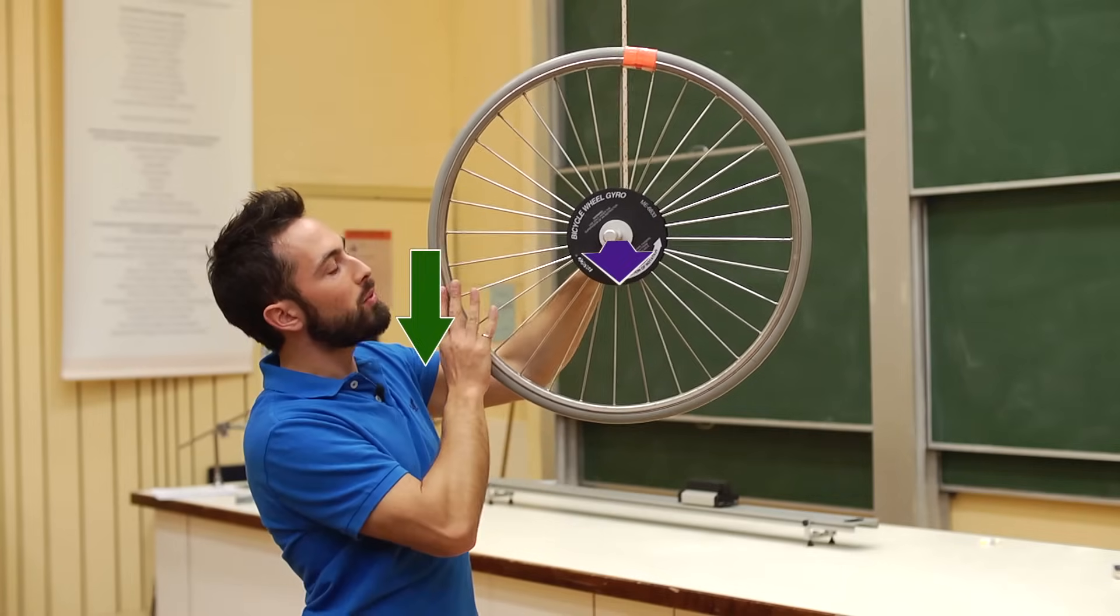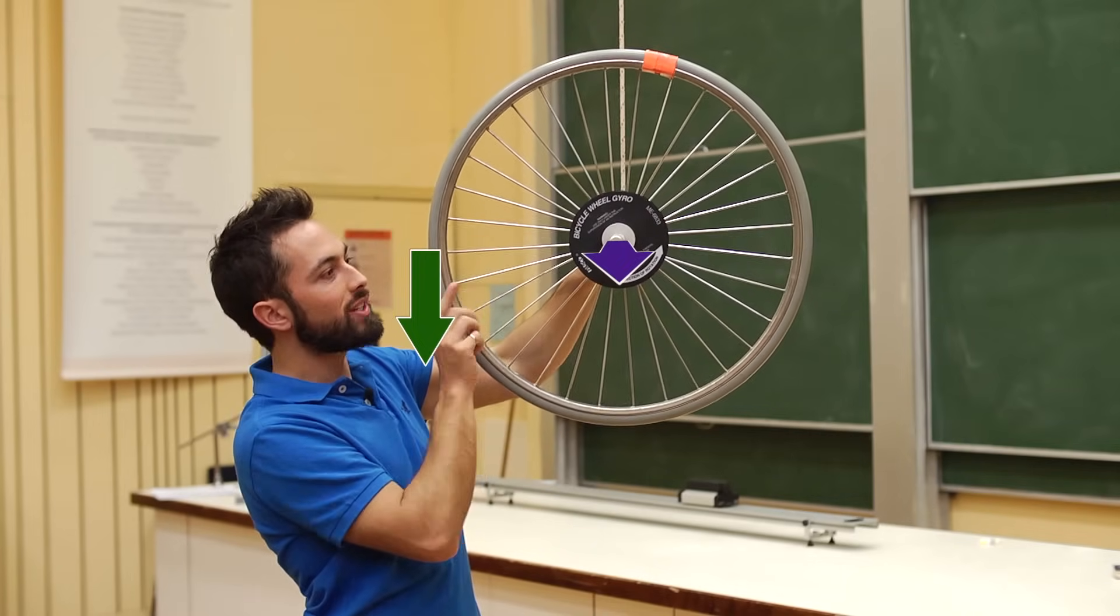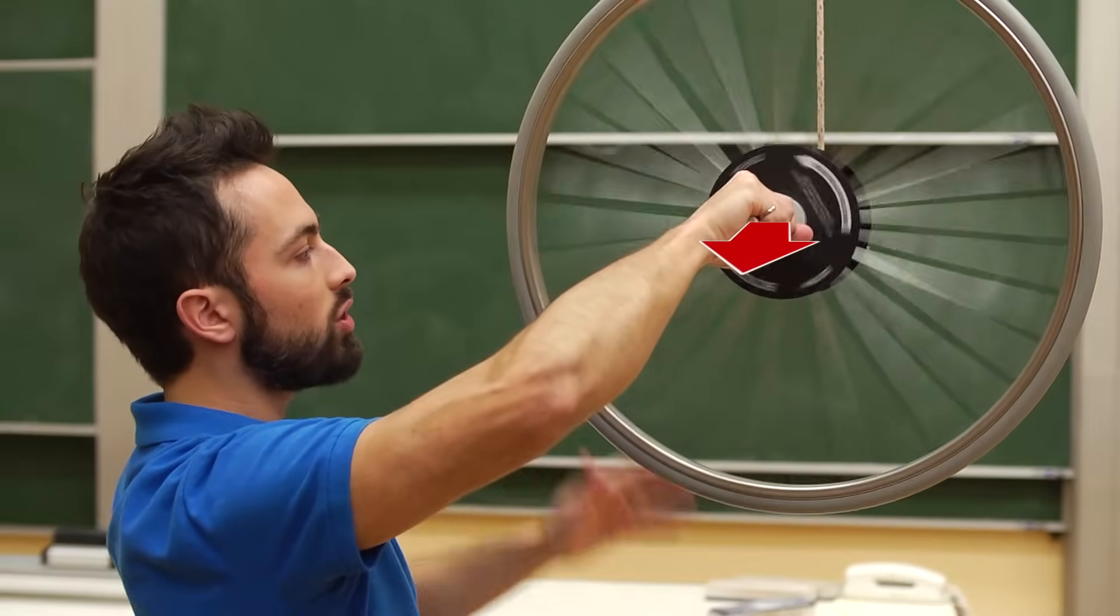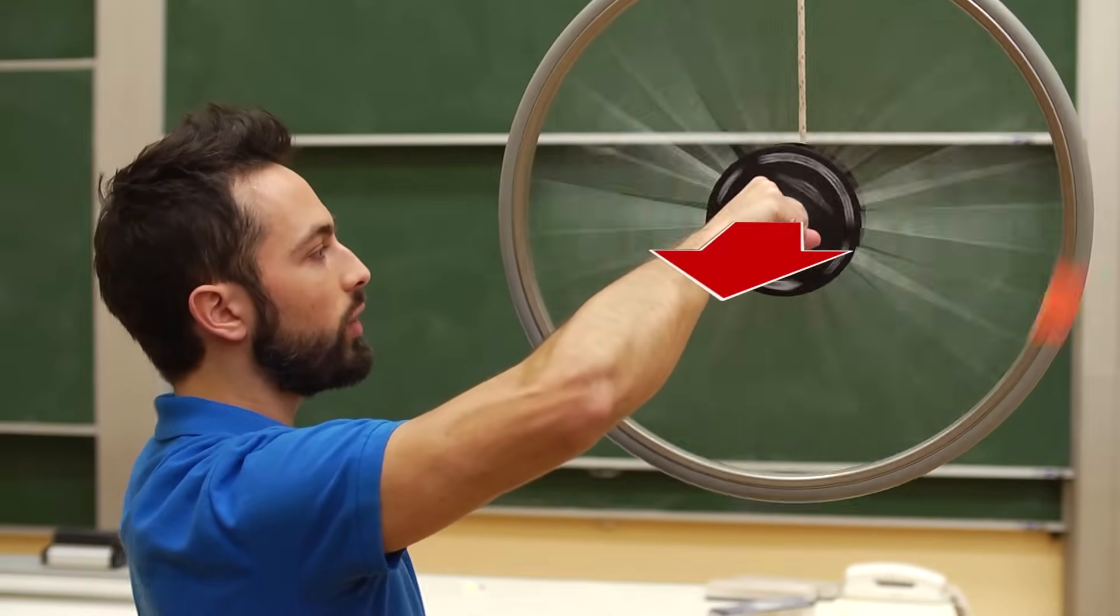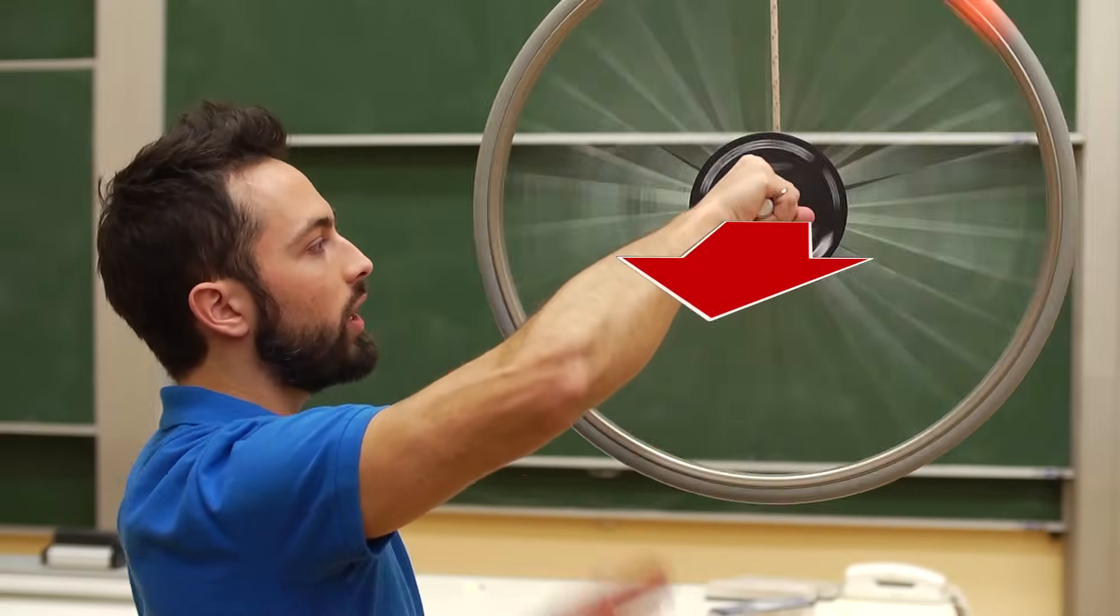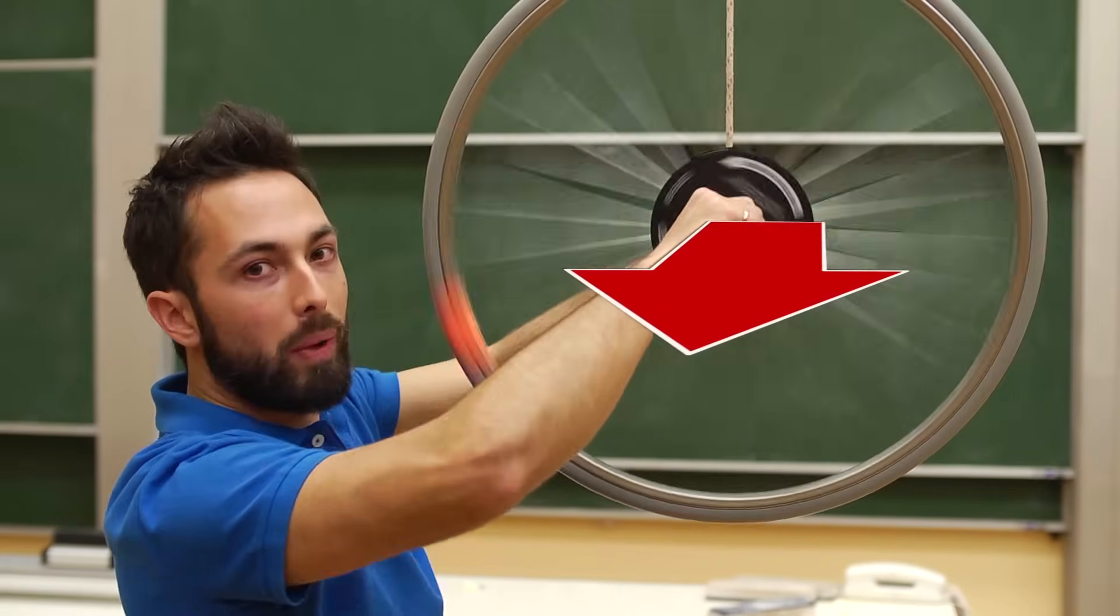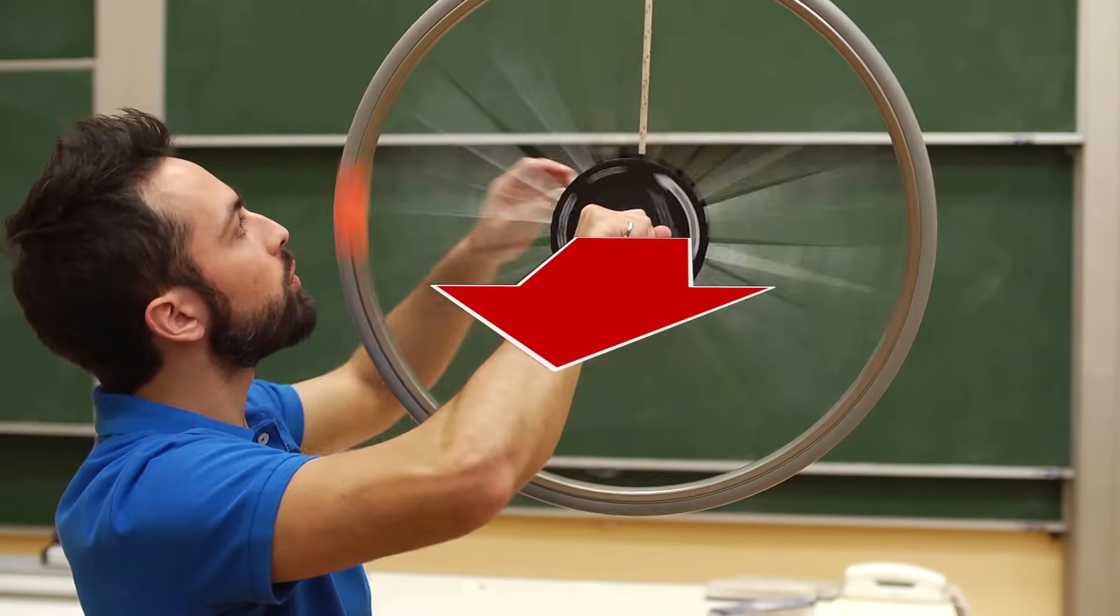So the angular momentum of this wheel is being increased in that direction. So the more I apply this torque, the more I increase the angular momentum of the wheel in the direction of the torque. So I'm making this wheel have a very large angular momentum out towards the camera, out towards you.